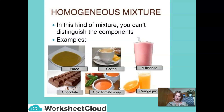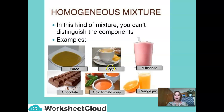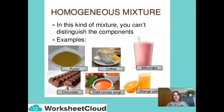We get different kinds of mixtures. The first one is called a homogeneous mixture — a mixture where you can't distinguish the different components. For example, here we have a puree, coffee, and a milkshake. When we look at a cup of coffee, we can't see the different components: we can't see the sugar, we can't see the milk, we can't see the water, and we can't see the granules of coffee. That is called a homogeneous mixture. The same applies to chocolate, cold tomato soup, and orange juice.